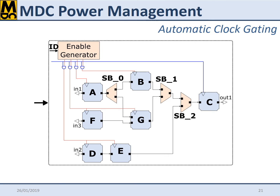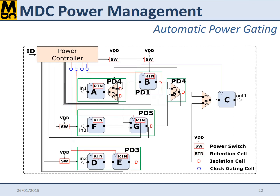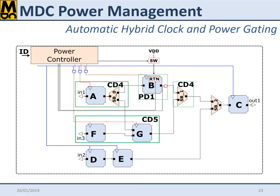MDC is able to apply clock-gating to all of the identified regions when targeting either FPGA or ASIC technologies. Power gating is applicable only in the ASIC case. MDC also has the capability of understanding, for an ASIC design, if a hybrid solution optimally combining both power and clock gating is better.